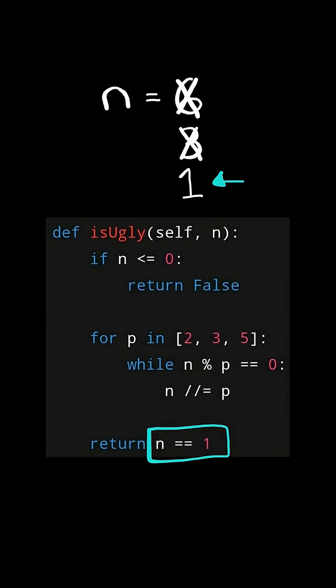If n happens to be equal to 1, then we know n only has prime factors 2, 3, and 5. So n is an ugly number.